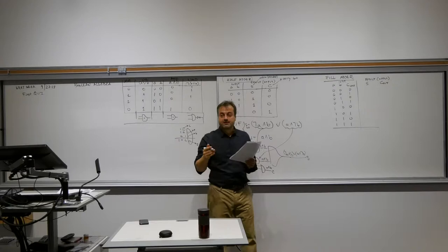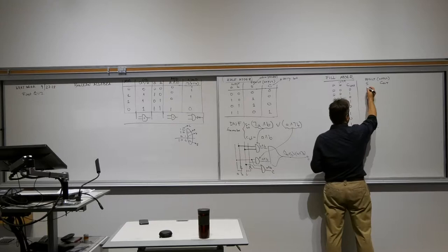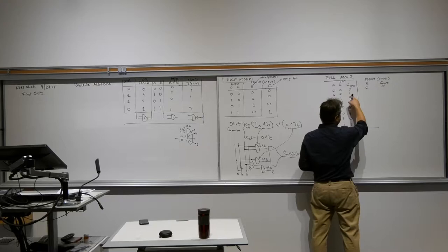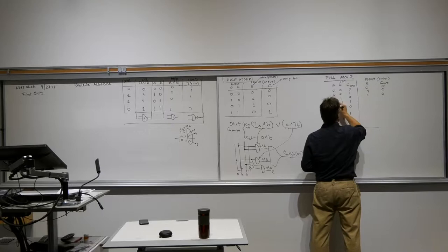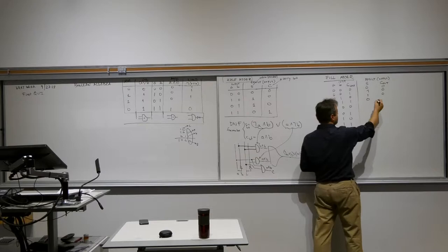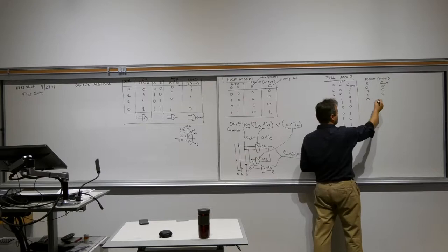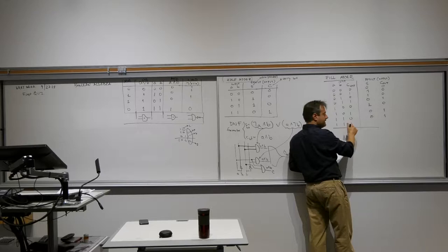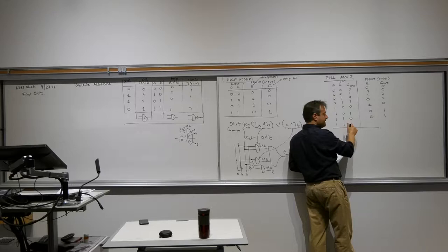Zero-zero-one: sum is one, carry is zero. Zero-one-zero: sum is one, carry is zero. Zero-one-one: sum is zero, carry is one. One-zero-zero: sum is one, carry is zero. One-zero-one: sum is zero, carry is one. One-one-zero: sum is zero, carry is one. And one-one-one: sum is one, carry is one.